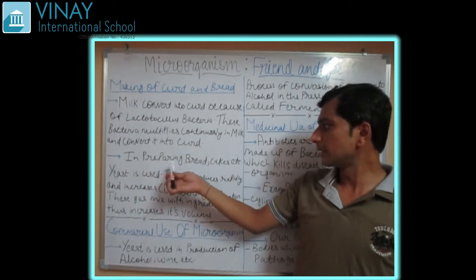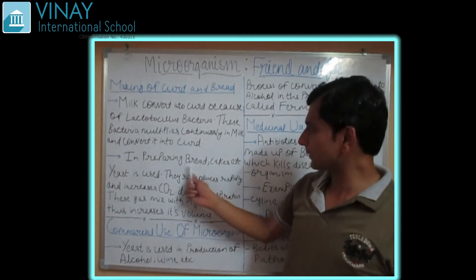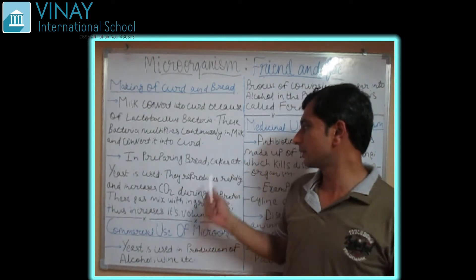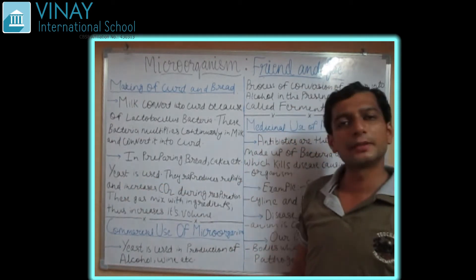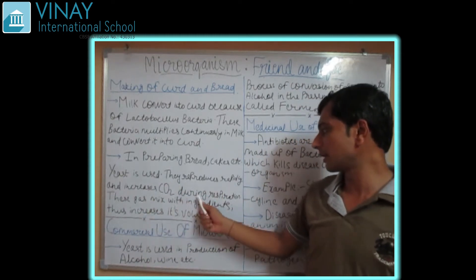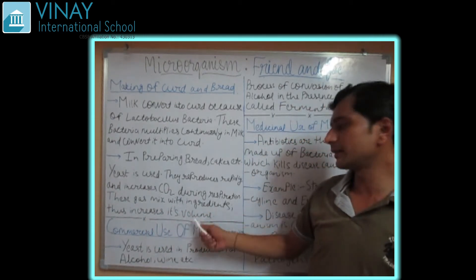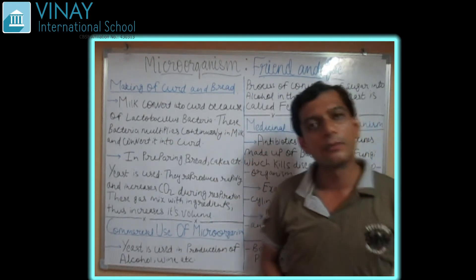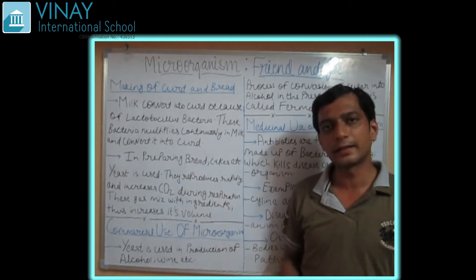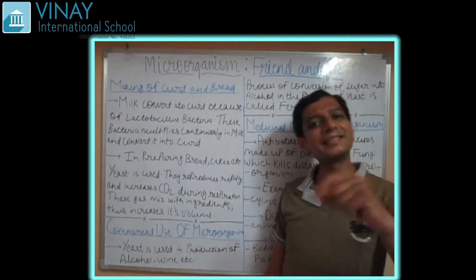Now let's see how bread is prepared. In the preparation of bread, cake, pastries, idli, and suji, we use yeast. Yeast reproduces rapidly and also produces carbon dioxide during respiration. This carbon dioxide gets mixed with the ingredients, thus increasing their volume. When we add yeast to food items like bread or cake during preparation, the yeast begins reproducing itself.